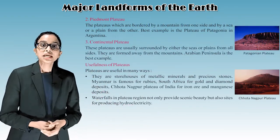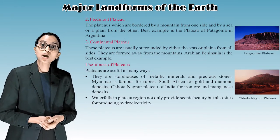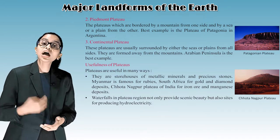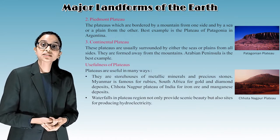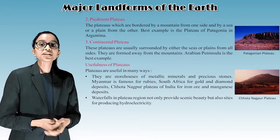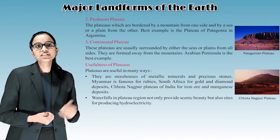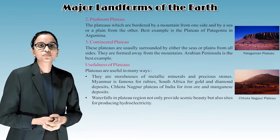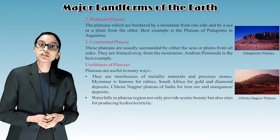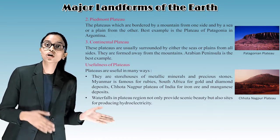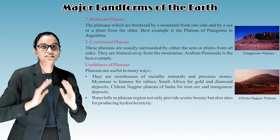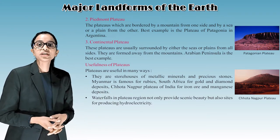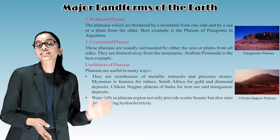Piedmont plateau: plateaus bordered by a mountain on one side and by a sea or a plain on the other. The best example is the plateau of Patagonia in Argentina. Continental plateau: these plateaus are surrounded by either the sea or plains from all sides and are formed away from the mountains. The Arabian Peninsula is the best example.